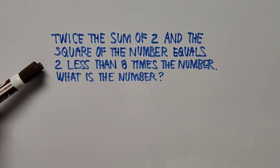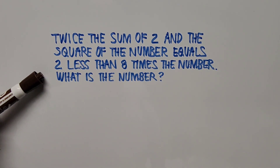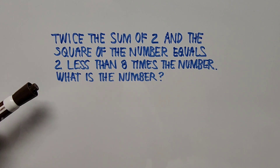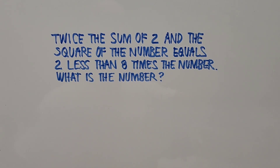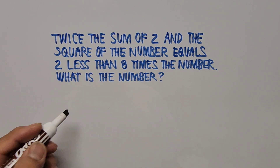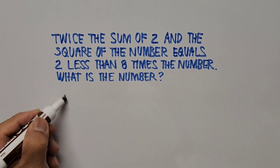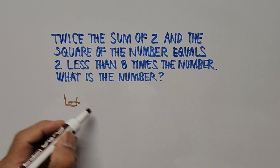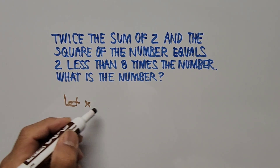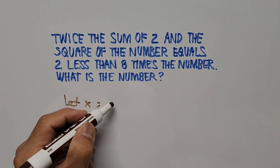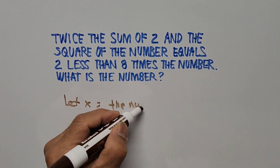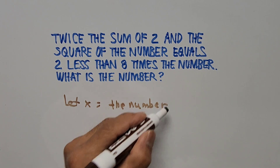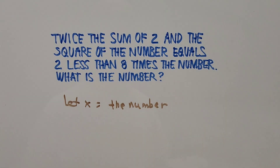Alright, let's start. The problem says: 'Twice the sum of 2 and the square of the number equals 2 less than 8 times the number. What is the number?' Here, let's represent the number as X — let X equal the number.